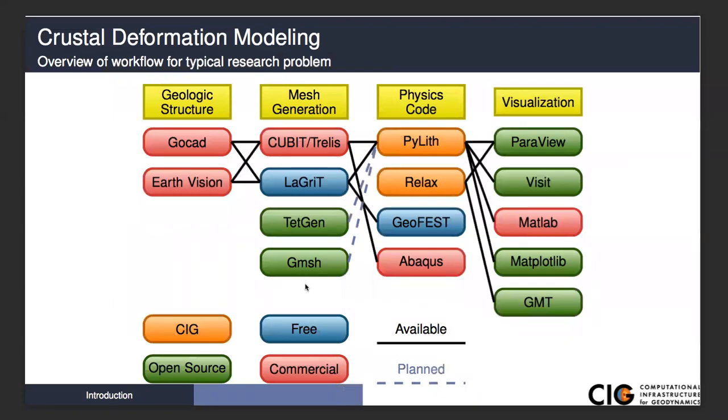PyLith is really geared towards the physics part of the whole research problem workflow. You'll do most of your modeling under the physics, but the process starts with some idea of the geologic structure. Sometimes you will use an entirely separate software for modeling the geologic structure. Some programs that are out there are GoCAD and EarthVision, both commercial codes heavily developed with influence by the oil industry.